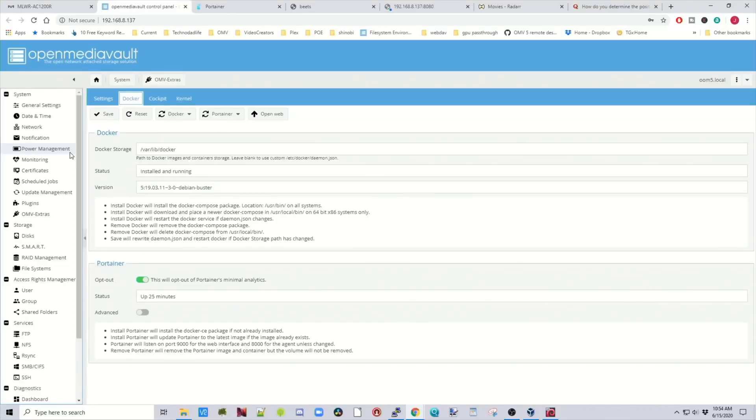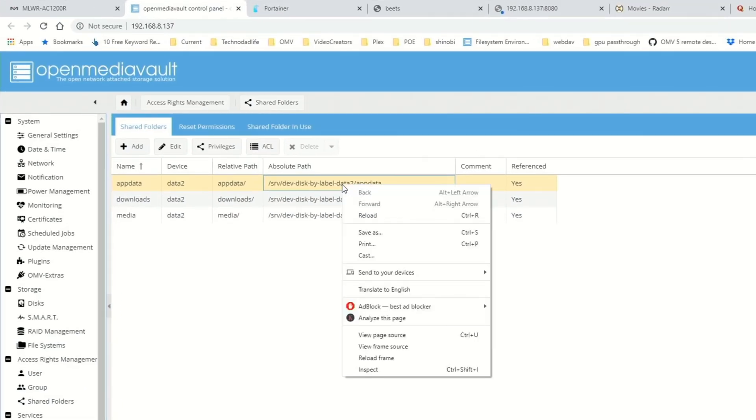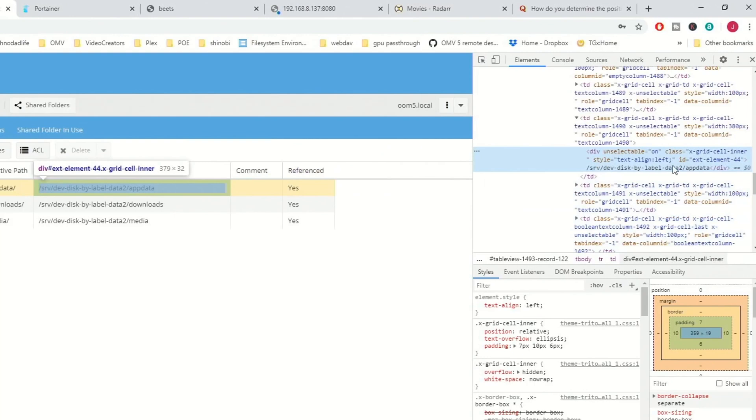So first thing we want to do is find our absolute path. So we'll go to Shared Folders. Click on that. And then right-click. And then go down to Inspect.